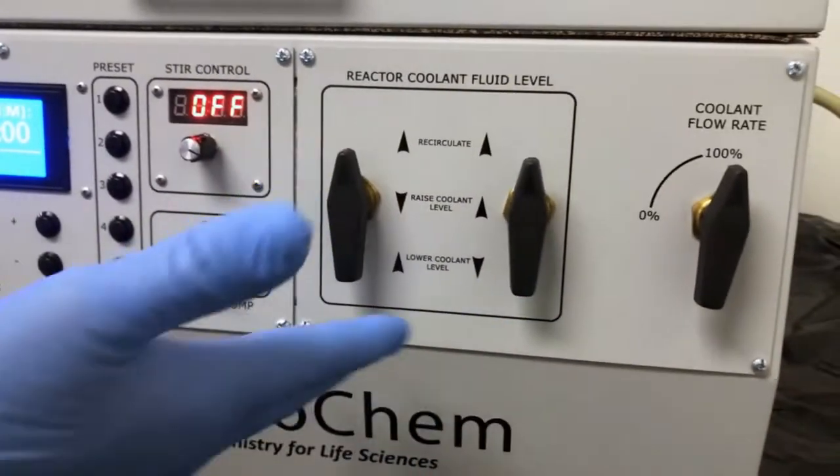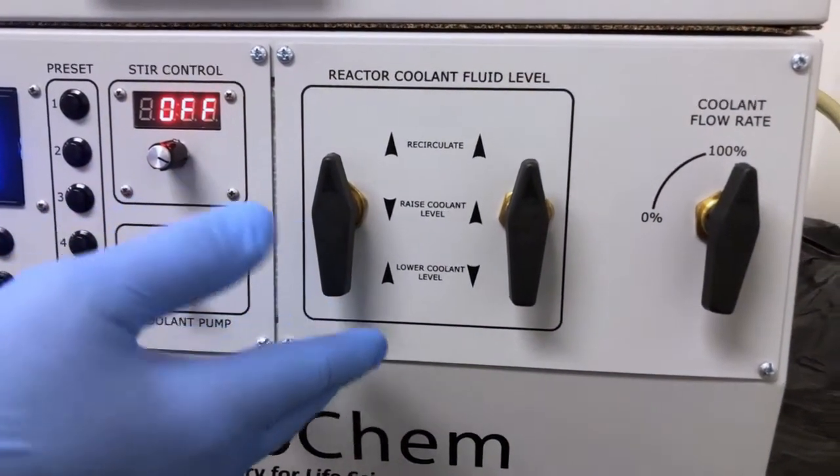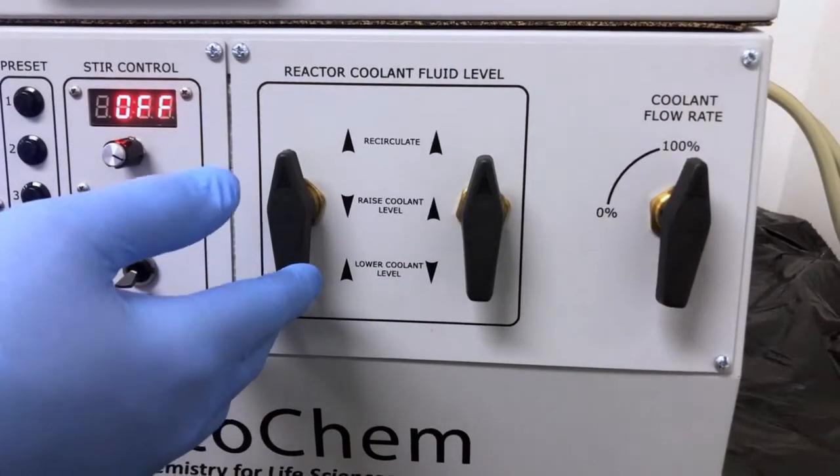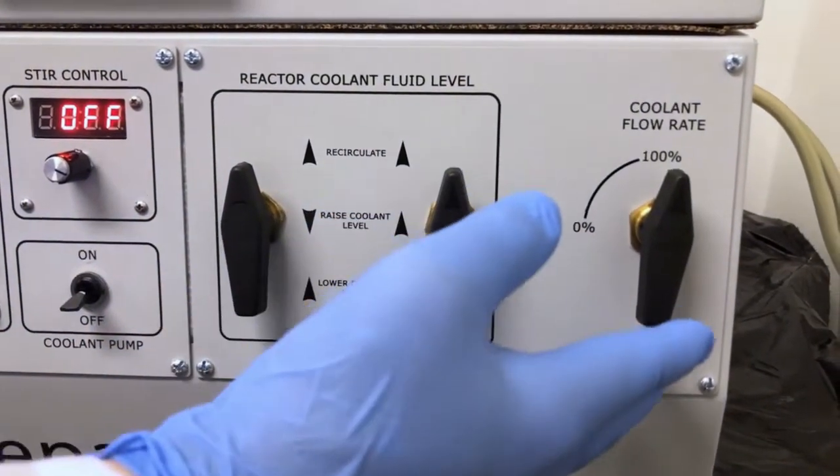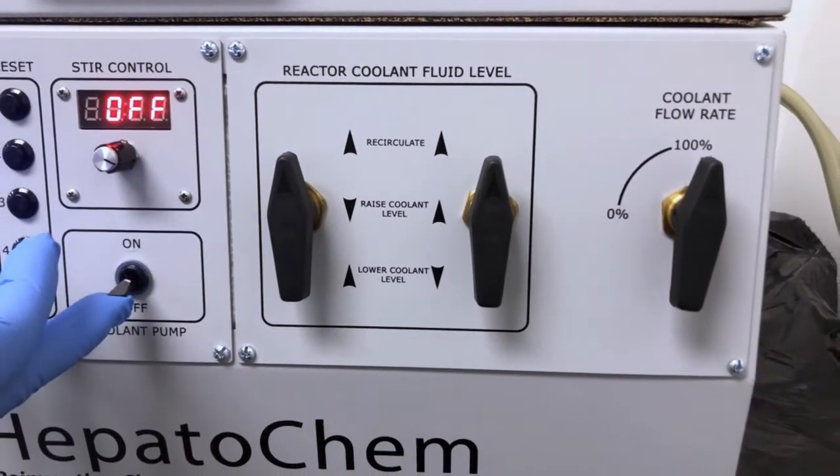The right side of the panel is dedicated to the operation of the Lucent 360's integrated temperature control system. The reaction coolant valves enable precise control over the fluid circulating through the reaction chamber with a separate lever to control the flow rate.